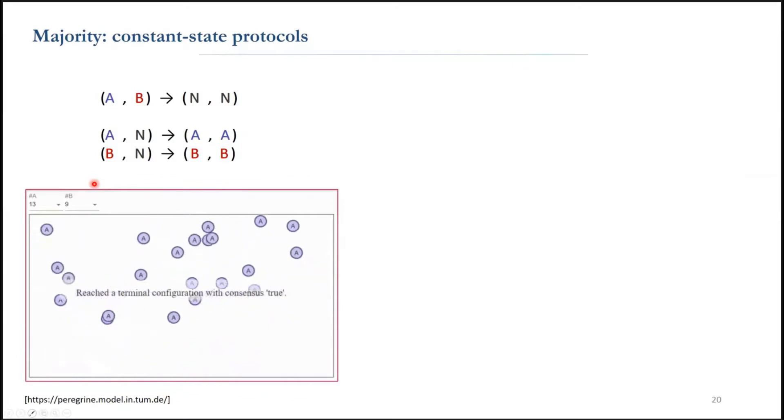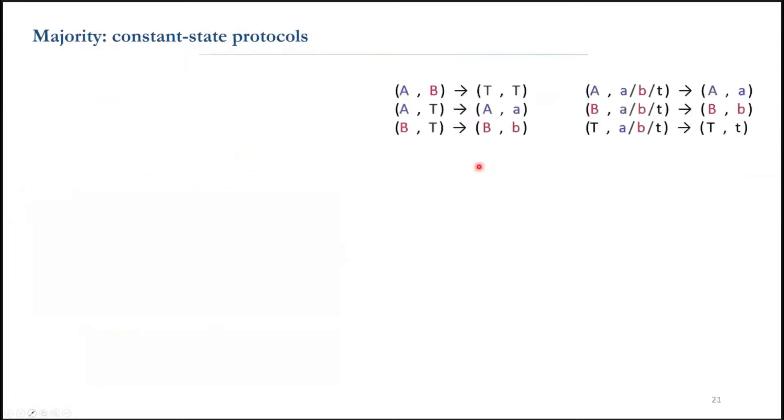But if the initial gap between a and b is small, then the probability is close to one half that it gets the answer wrong. This is because every agent converted to having a vote can also convert another agent, so it doesn't preserve the initial gap.